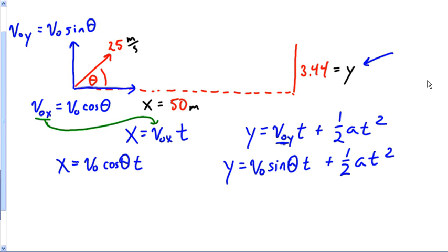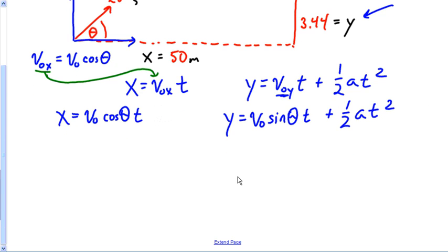Now you've got it narrowed down. My unknowns are t and theta, but I want to find theta, so I'm going to solve this smaller equation for t: X divided by V0 cosine theta would be t.